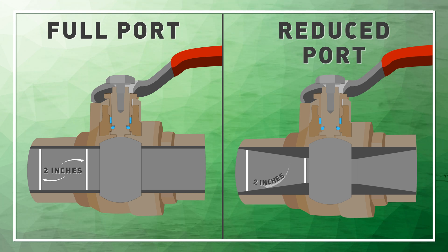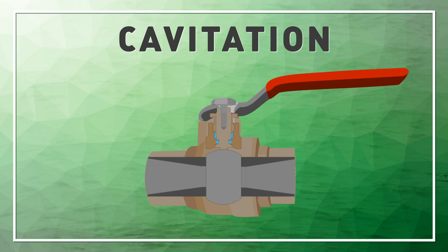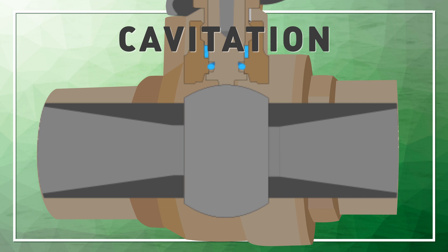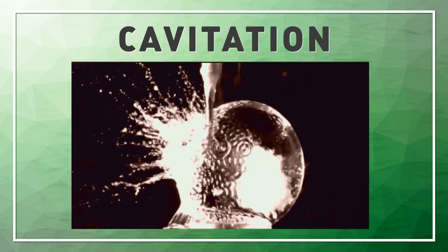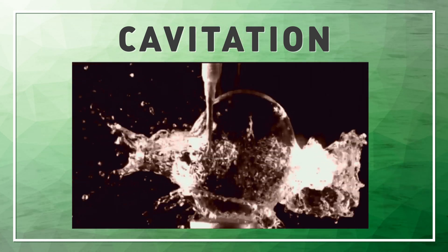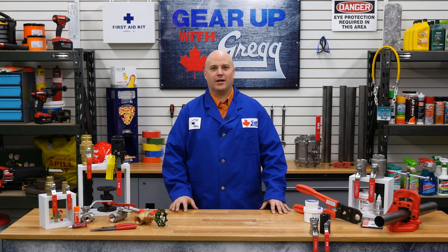Full port valves are more sought out because reduced port valves are more vulnerable to cavitation. Cavitation is a result of change in diameter inside the reduced port, which creates pressure drops, forming vapor bubbles. Once the pressure recovers downstream, the bubbles will begin to collapse, returning to a liquid state, and although this may sound harmless, the constant implosion of the bubbles releases energy and over time will damage the structure of the valve and pipe.